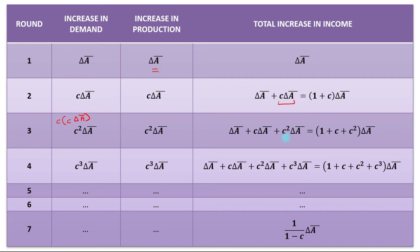Again, a fraction MPC of the increase in income from the third round will be spent on consumption, which will lead to an increase in demand. To meet this increase in demand, production has also to be increased by the same amount. So the total increase in income of all four rounds will be change in A-bar plus MPC times change in A-bar plus MPC squared times change in A-bar plus MPC cubed times change in A-bar, representing the increase in income of each round.